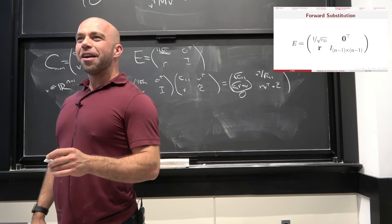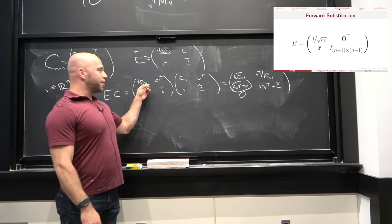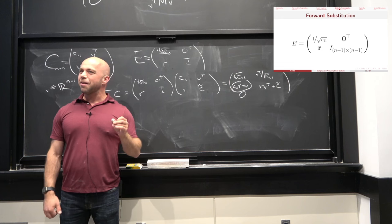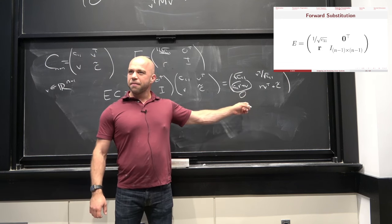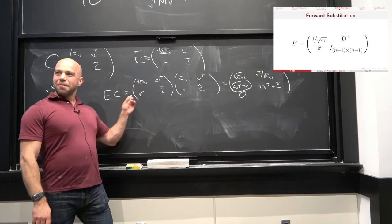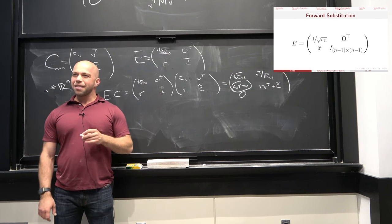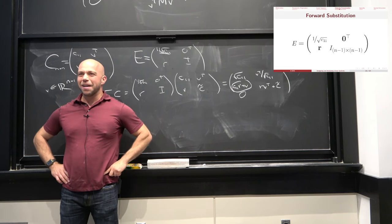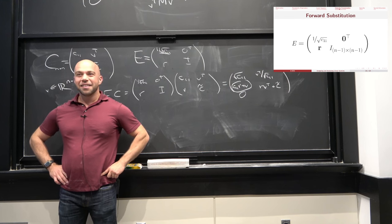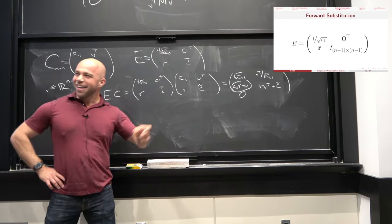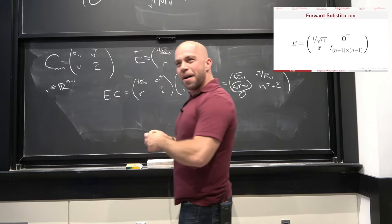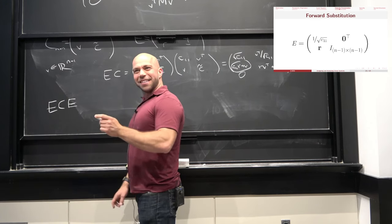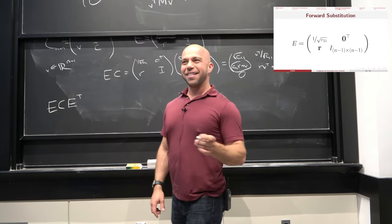Now here's where we depart from Gaussian elimination: we know that C is symmetric, but so far we haven't really used symmetry, and the result of pre-multiplying by E may not be symmetric anymore. So for symmetry preservation, what can we do? We can post-multiply by E^T. That's the key idea: we compute E C E^T. We already have EC, so now we post-multiply by E^T = [1/√C₁₁, r^T; 0, I].